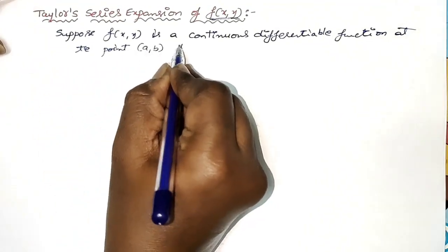f_xx is nothing but the second order partial differentiation of f with respect to x, that is ∂²f/∂x². Plus 2 times (x minus a) into (y minus b) into f_xy at (a, b) — that is the partial differentiation of f with respect to y and x — plus (y minus b) whole square into f_yy at (a, b).